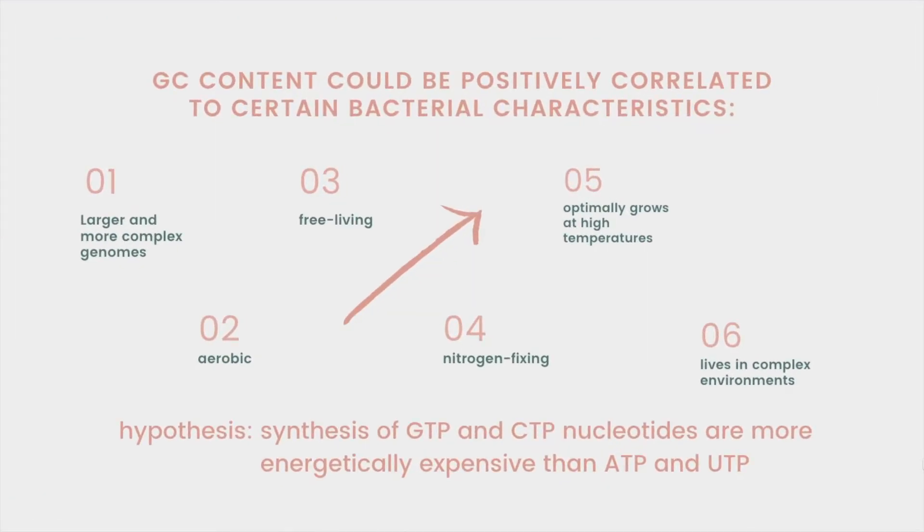Another interesting suggestion that scientists have made is that GC content could be positively correlated to bacterial characteristics such as having larger and more complex genomes or being aerobic, free-living, nitrogen-fixing, as well as optimally growing at a higher temperature and living in complex environments.